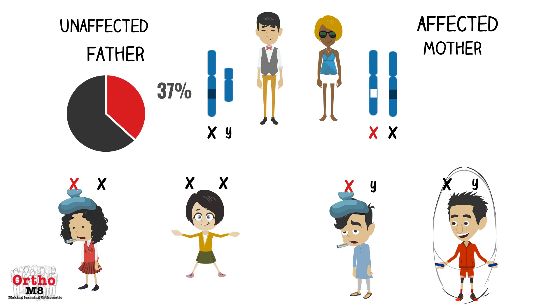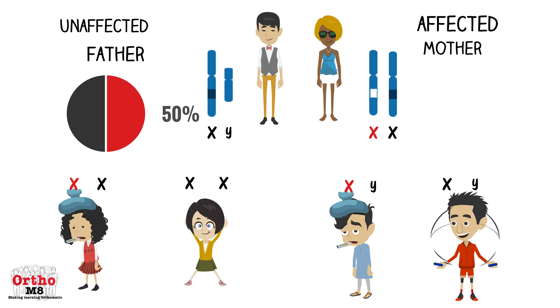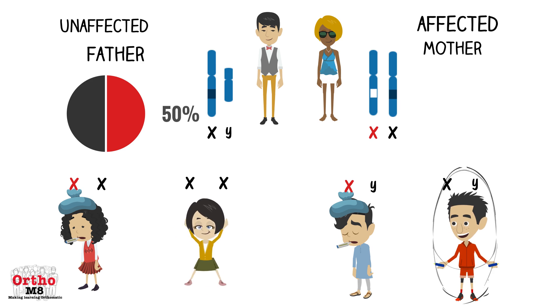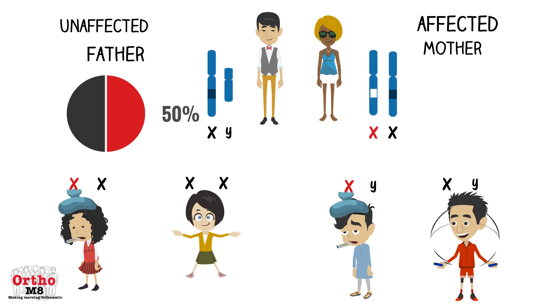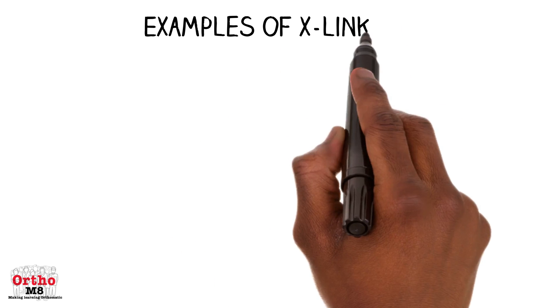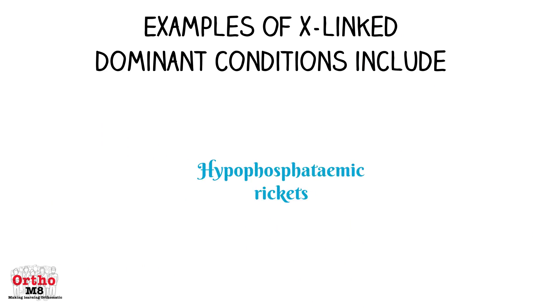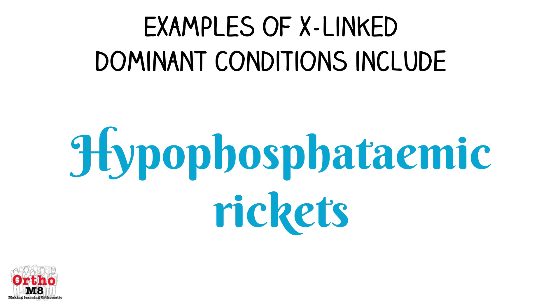Males express the disease fully, but females have variable expressivity in the heterozygous genotype. An example of an X-linked dominant condition is hypophosphatemic rickets.